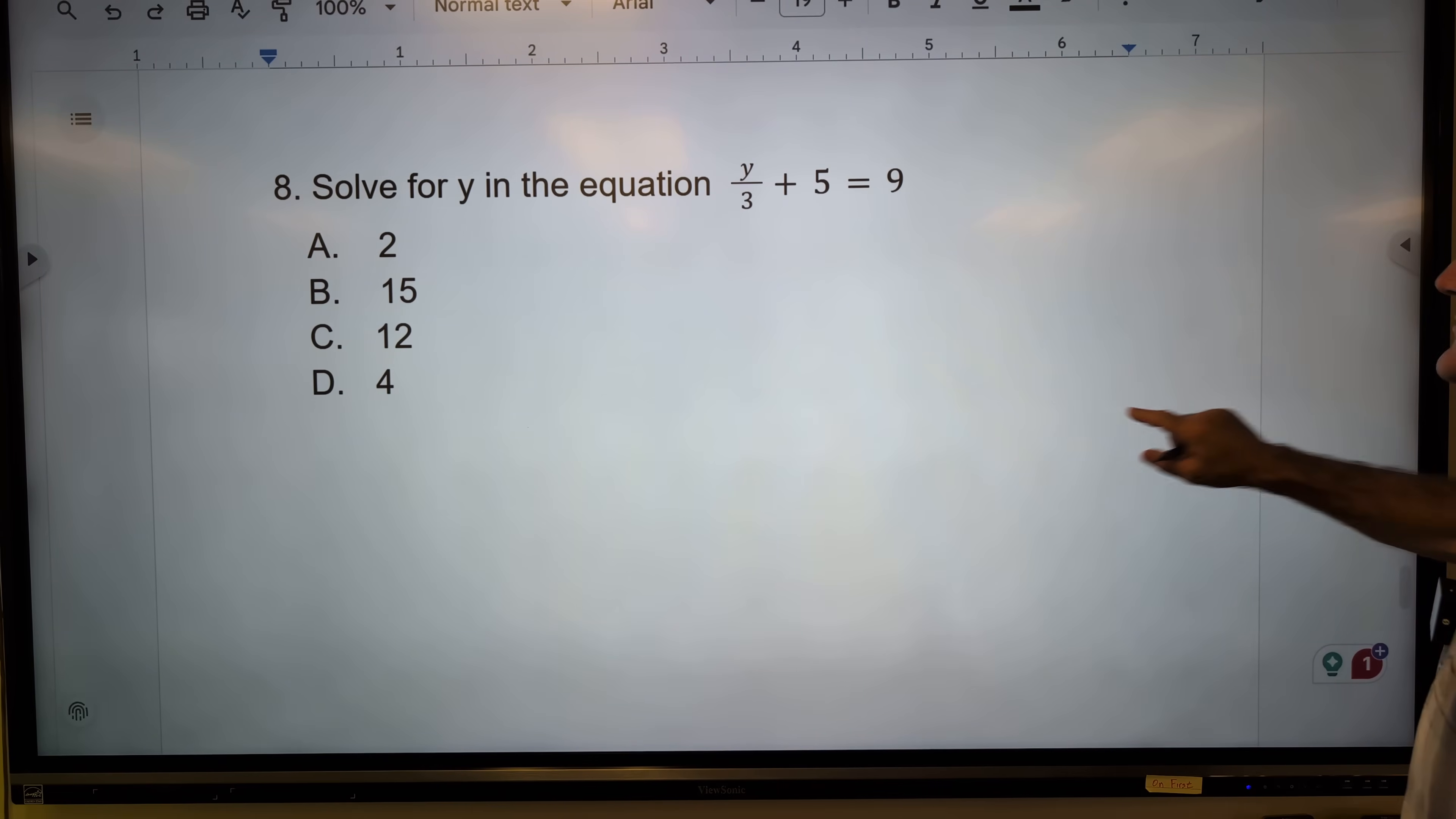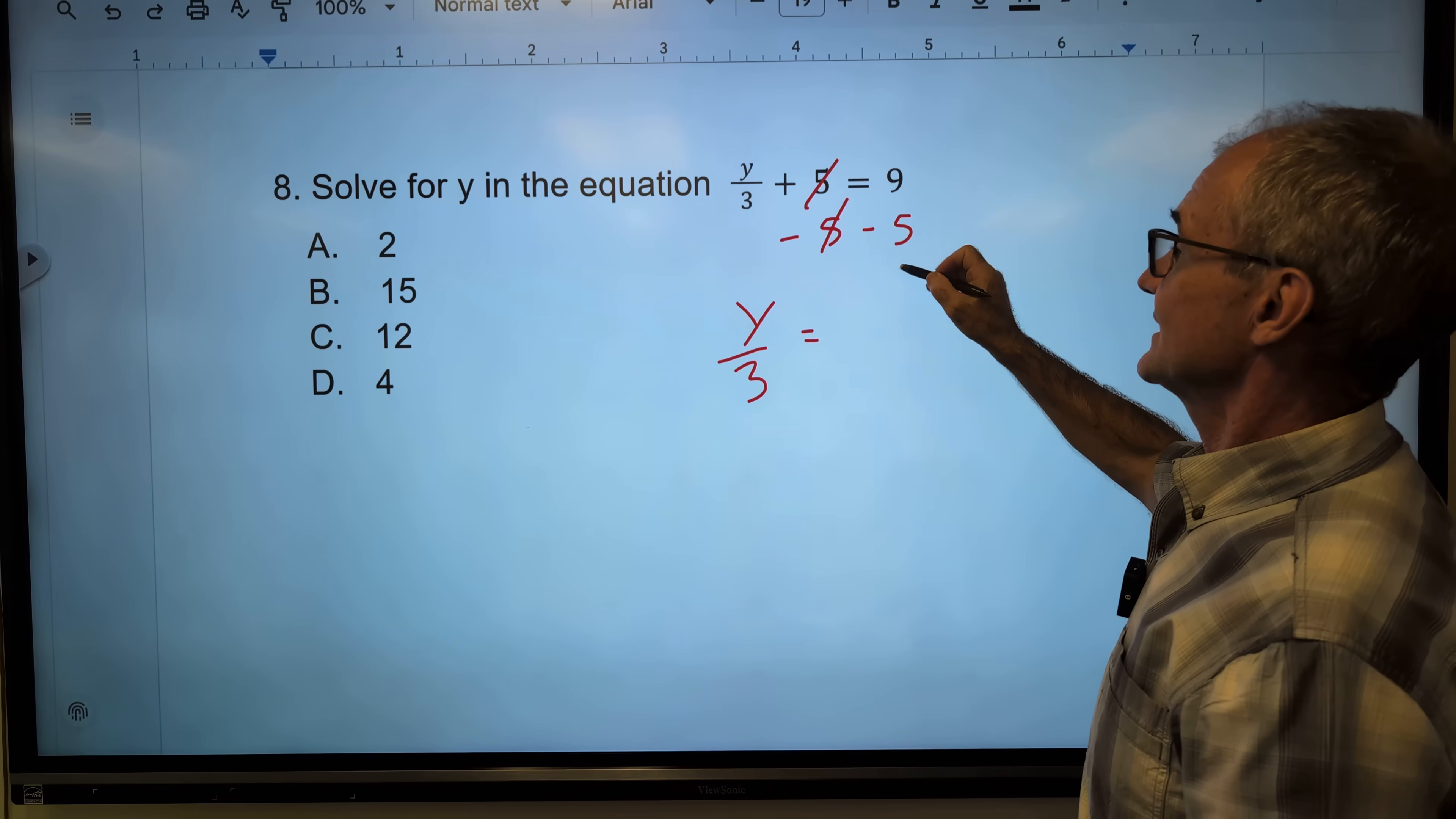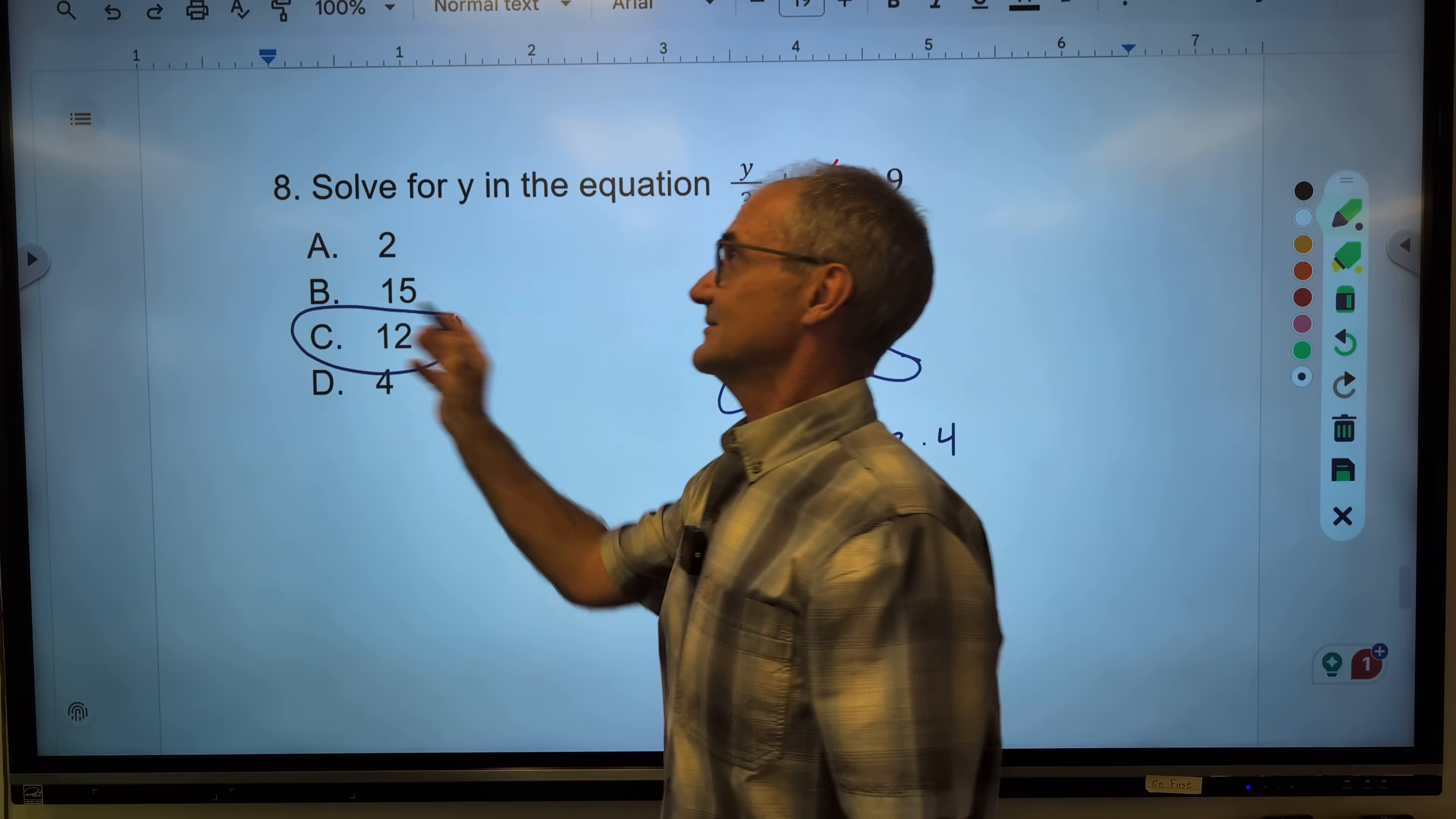Number 8, another algebra equation. Very classic kind of mathematical knowledge, ASVAB, or even the AFOQT exam as well. I'm going to get my variable y - no difference between a y and an x, just an unknown. By itself, I'm going to subtract 5 from both sides. That's going to give me y over 3 by itself, is equal to 9 minus 5, which is 4. One ratio equal to another ratio is a proportion. This is the same thing as 4 over 1. I could cross multiply. y times 1 is just y, is equal to 3 times 4, or 12. Correct answer, answer C.